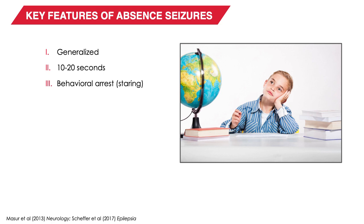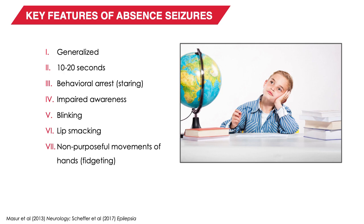Outwardly, these seizures are manifest by behavioral arrests or staring spells, and are associated with impaired awareness — the child during those 10 to 20 seconds may be completely or partially unaware of the world around them. Sometimes the staring spell is associated with blinking, lip smacking, or non-purposeful movements of the hands that appear like fidgeting. In James's case, his parents might wonder whether the frequent daydreaming observed by the teacher results from ADHD, or whether those spells might actually be absence seizures — and one way to answer that question is by getting an EEG.